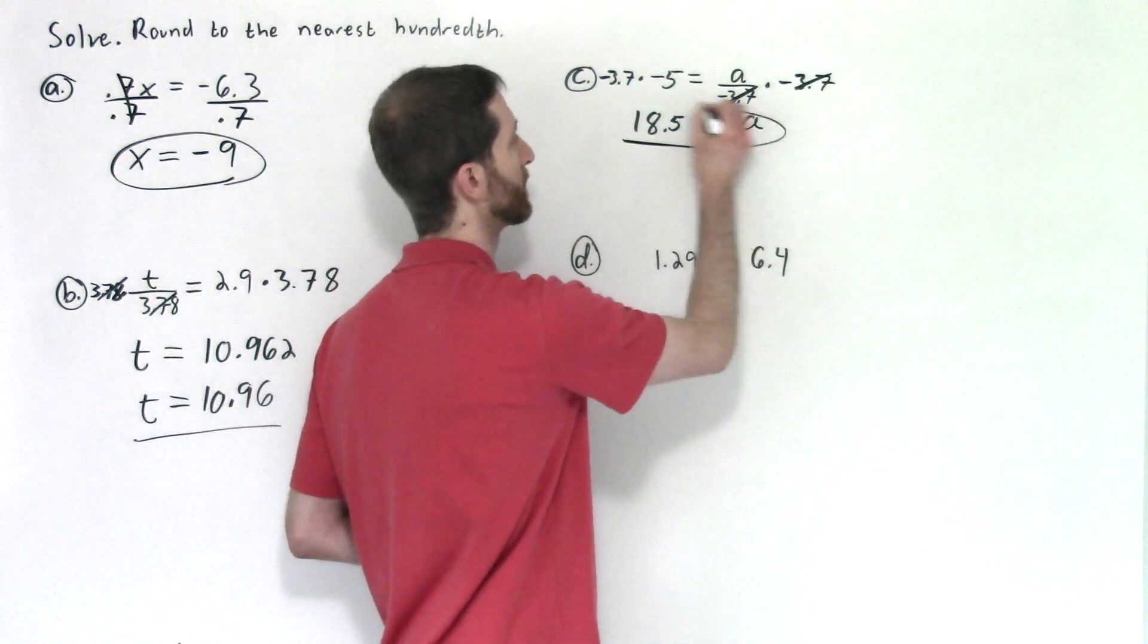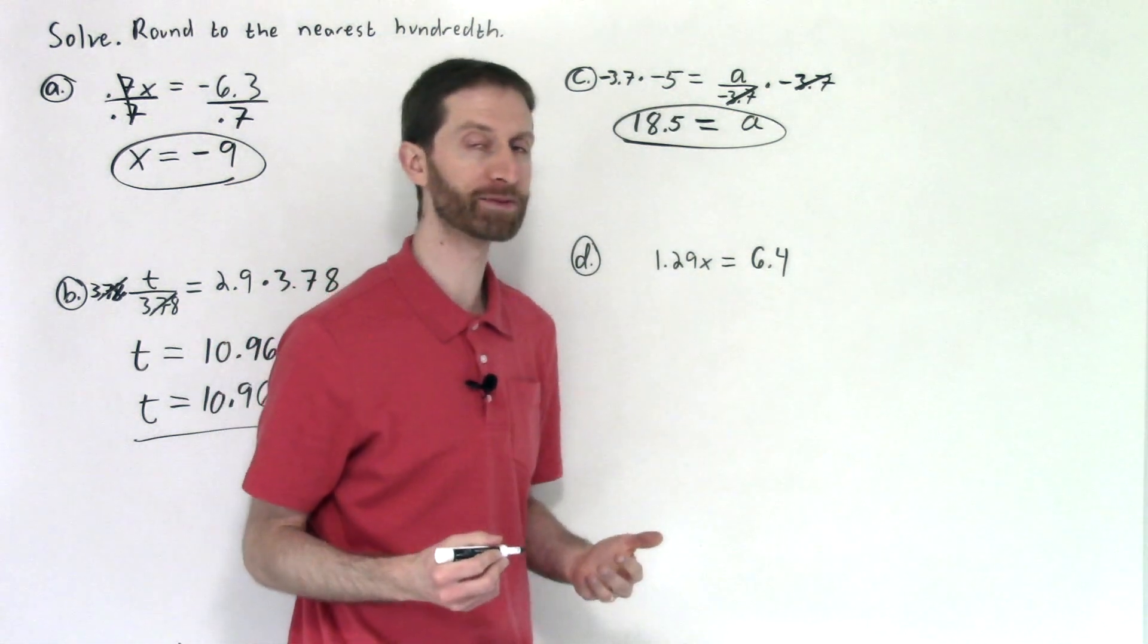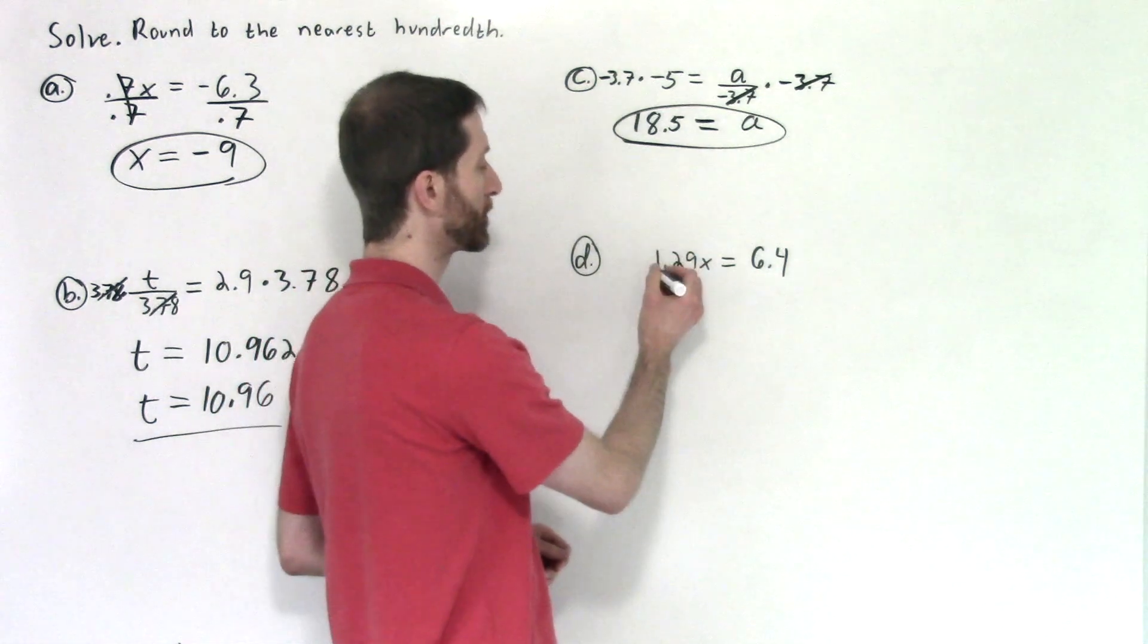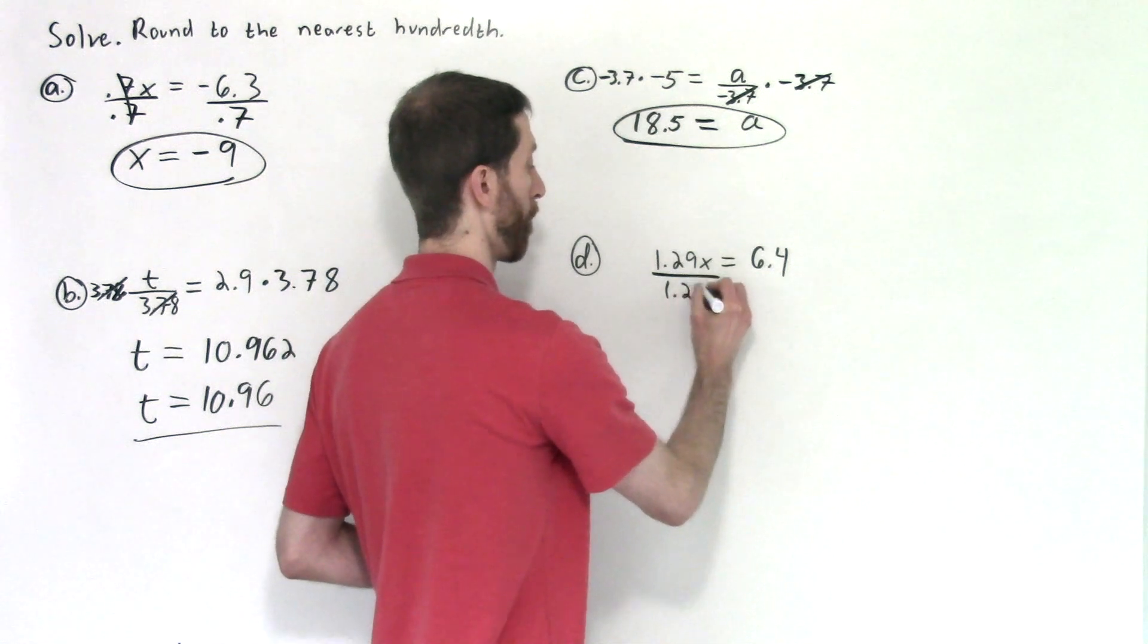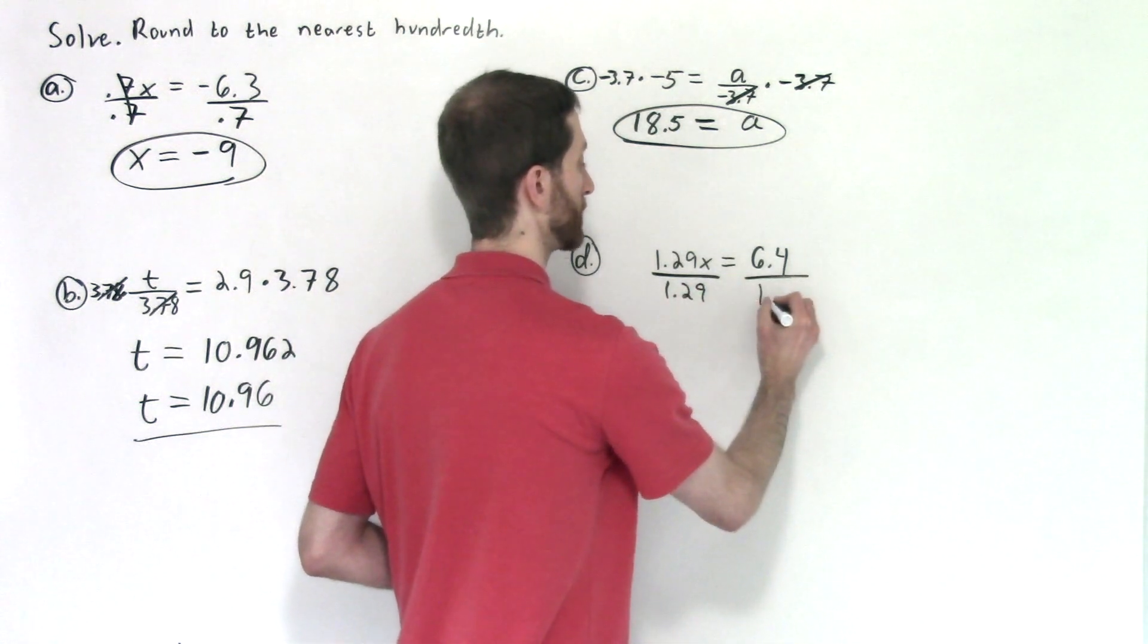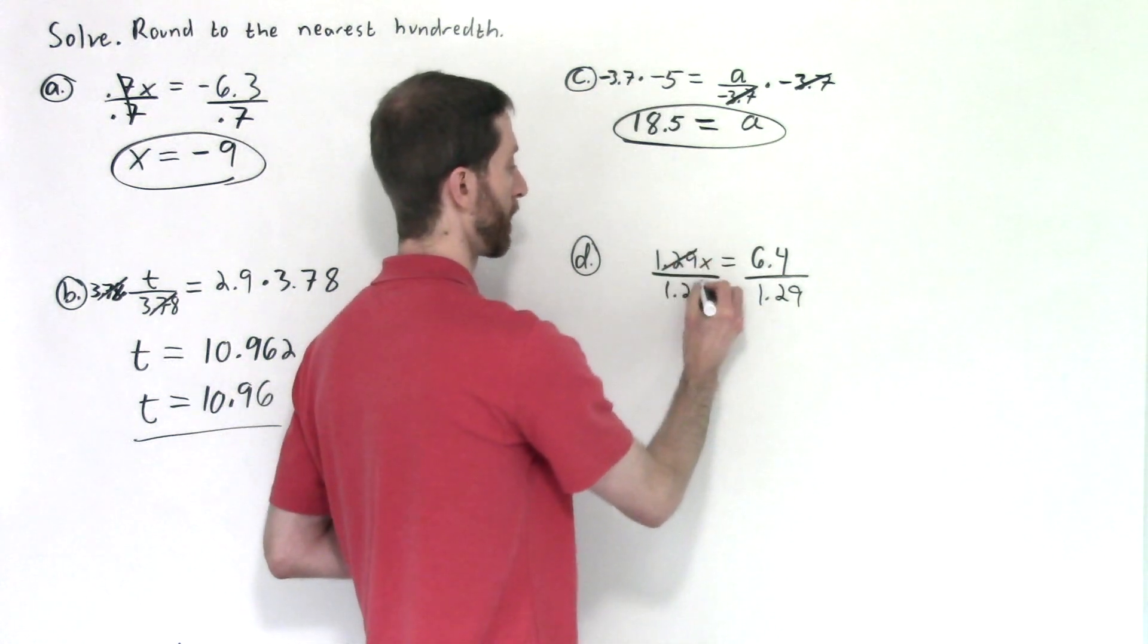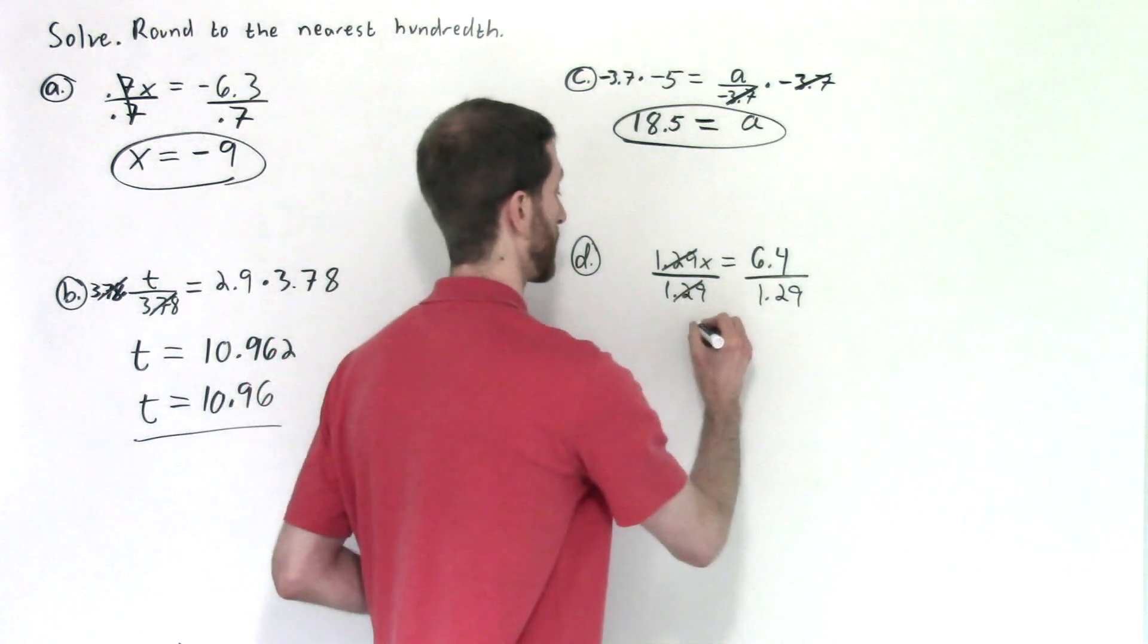Then this problem is just gnarly in terms of the types of numbers, but you can rock this with no problem at all. You've got multiplication by 1.29. So we undo that by dividing by 1.29 on both sides. Our goal is to isolate x. Let's verify that we've done that. We have. They divide out to give us 1 times x is x.